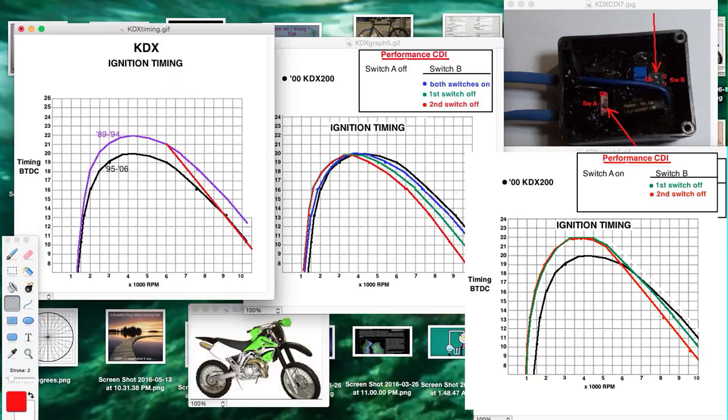And unfortunately, digital cannot be used on this KDX because there's no trigger coil, which is a separate coil for telling the digital CDI while giving it a reference mark as far as timing comes.